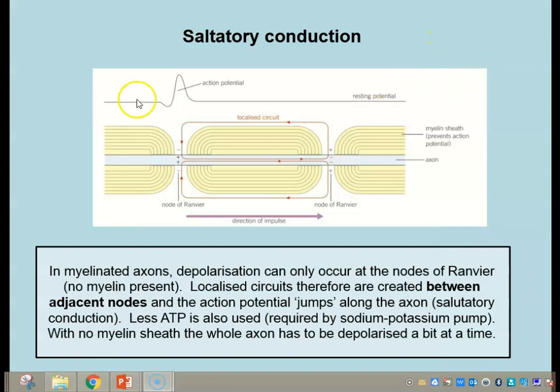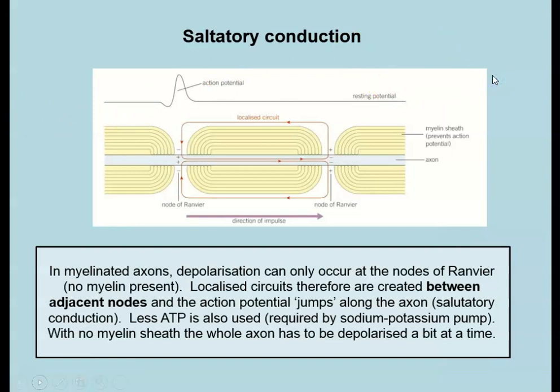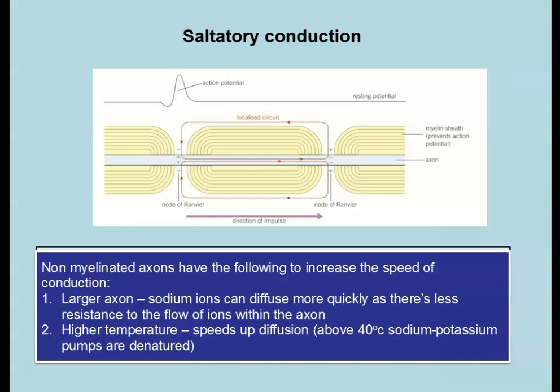Because we are using fewer sodium-potassium pumps to restore the resting potential, we use less ATP — we only need to create the resting potential at those key nodes. Without a myelin sheath there is no insulation, so we have to generate an action potential all the way along the axon with very little space between each one; we can no longer jump, so conduction speed greatly reduces. To overcome this, organisms can have larger axons — squid axons are studied because they're very large, allowing sodium ions to diffuse more quickly due to less resistance in the axoplasm.